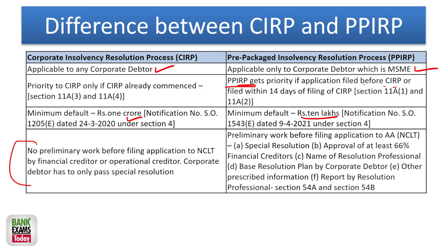But in case of PPIRP, you need to pass a special resolution with approval of 66.66% — two-thirds — of creditors, name of the resolution process, name of the resolution professional you are going to hire, base resolution plan by the corporate debtor, other information, a proper report. This homework has to be done even before appearing before NCLT — to make the process simple and smooth — while this is not required in case of CIRP.